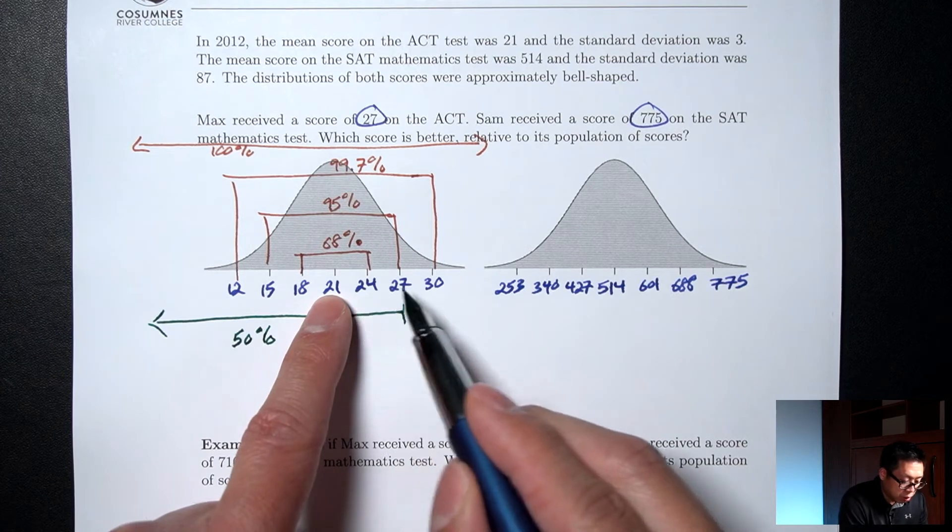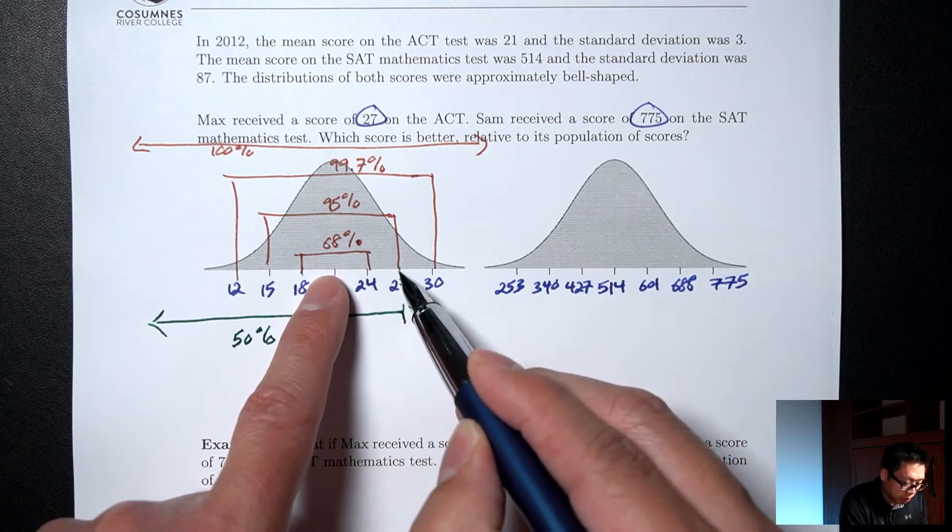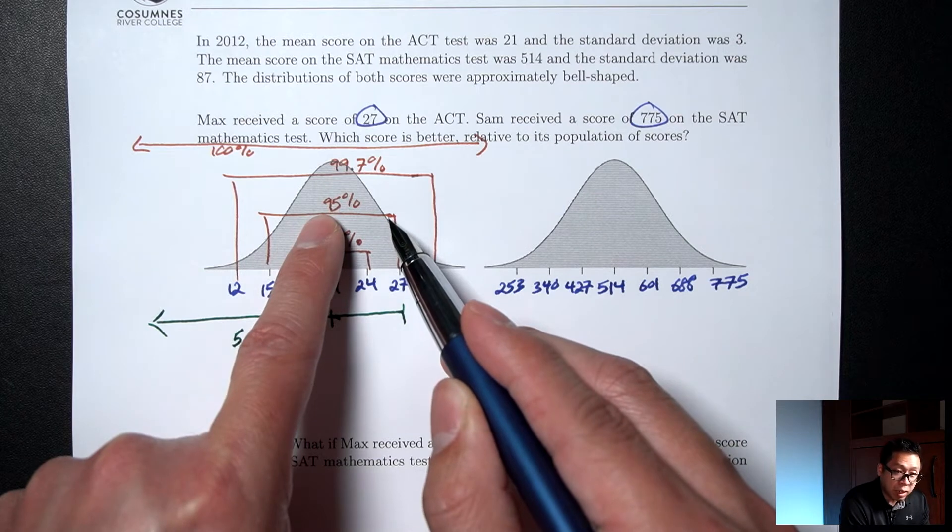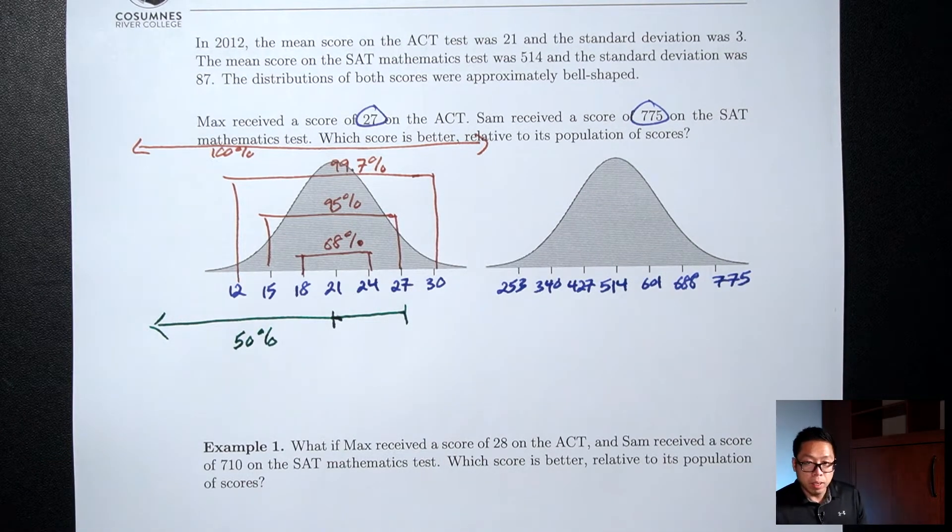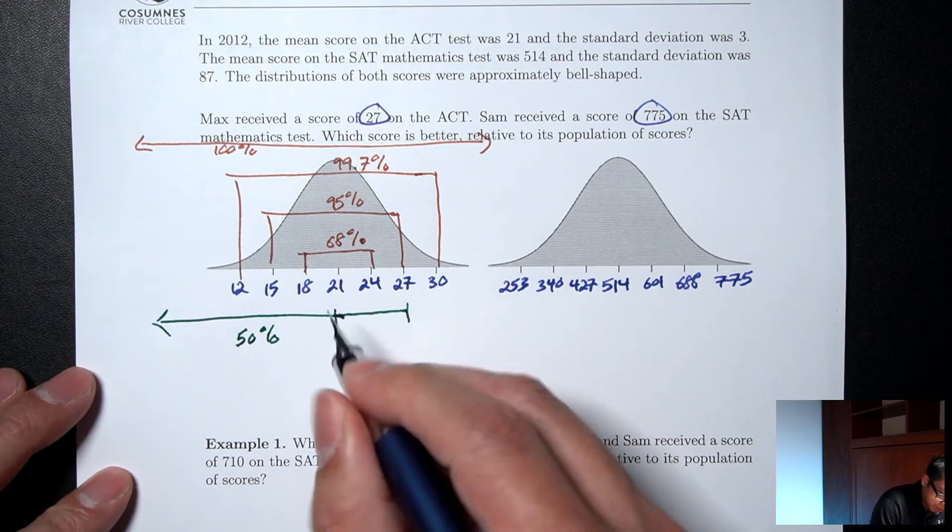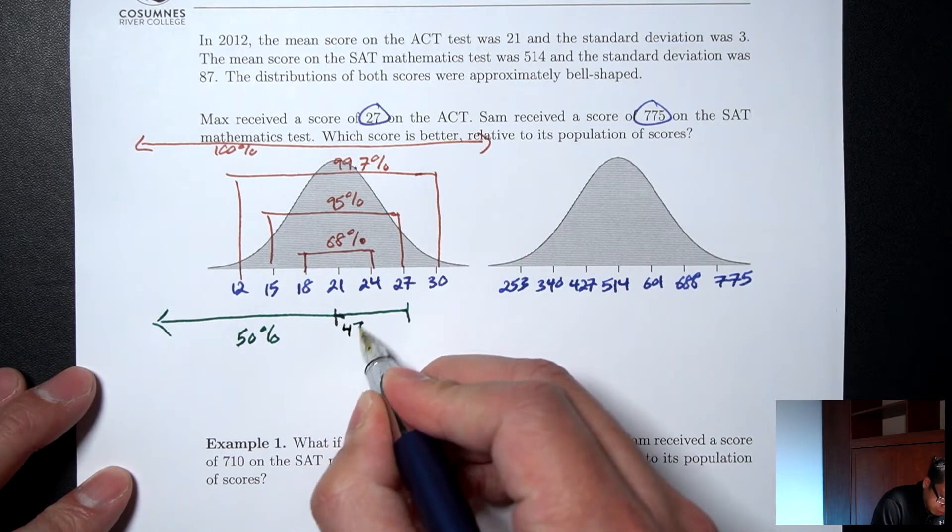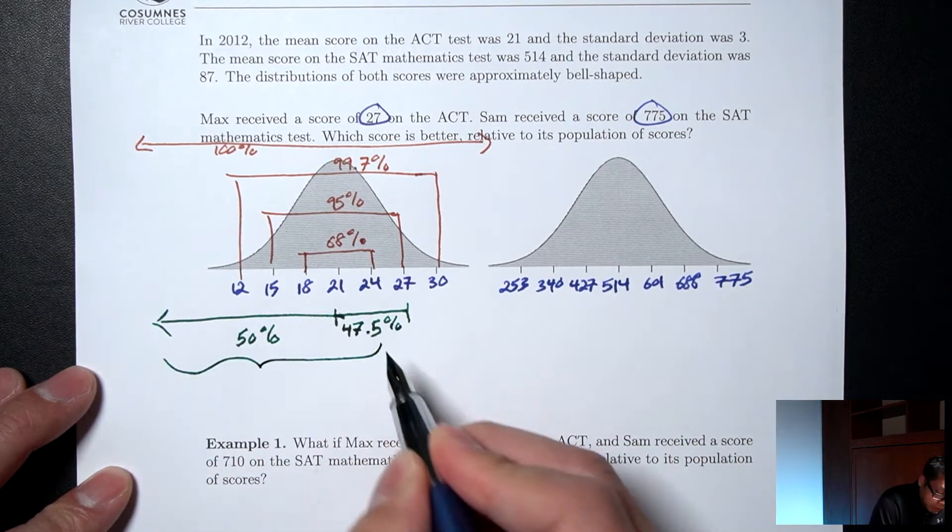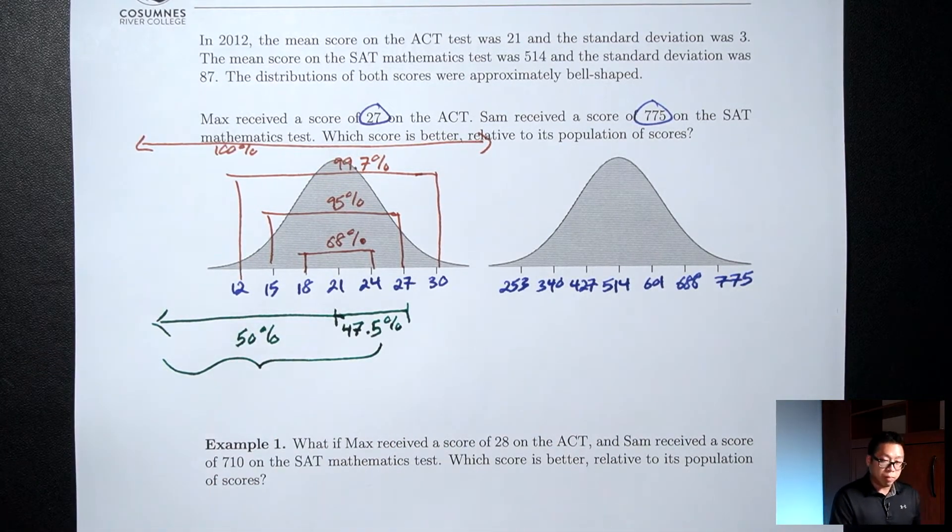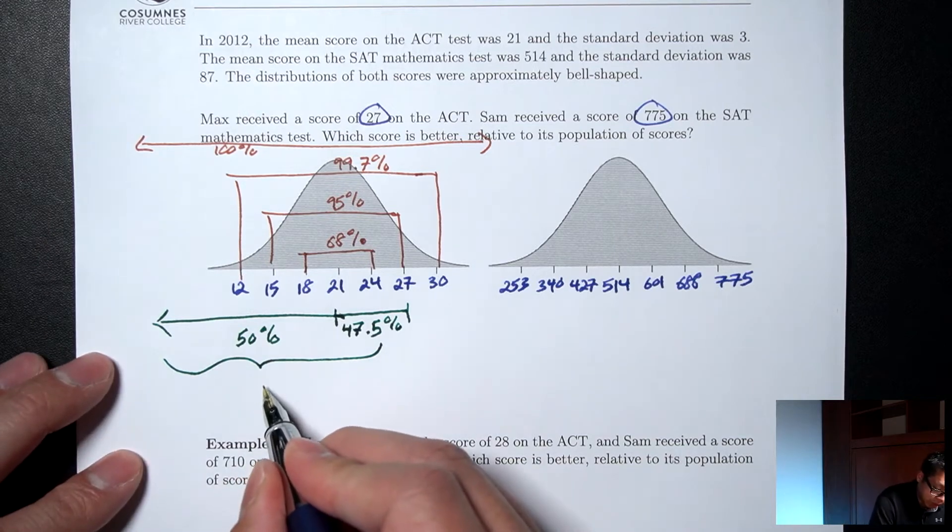Middle to two steps above, so middle to two up is half of the 95%. So 95 divided by 2 is 47.5%. And these two together, 50% plus 47.5% is 97.5%.